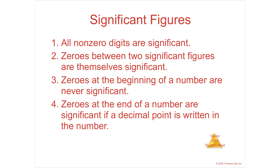This is the list that has to be memorized and used. All non-zero digits are significant — anything that's not a zero is significant. It's the zeros that are the problem. If you have zeros between two significant digits, like 405, the inside zero is significant — it's part of that number. It's the end zero and the beginning zero that are iffy.